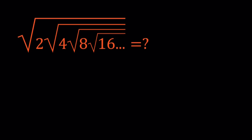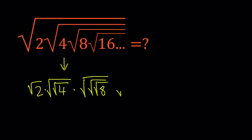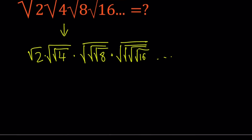First of all, notice that 2 is under 1 radical, 4 is under 2 radicals, 8 is under 3 radicals, 16 is under 4 radicals, so on and so forth. So whatever the power of 2 is, that's how many radicals that power is under. So we can basically write this as follows: we have the square root of 2, and then the square root of 4 is going to be the square root of the square root of 4, and then times the square root of the square root of the square root of 8, and so on. This is going to give us a pattern which we're going to work out using some series, and we're going to find the result.